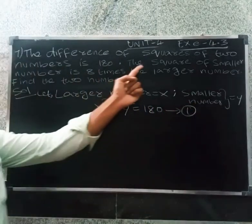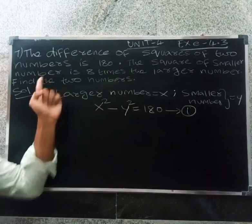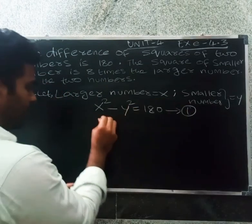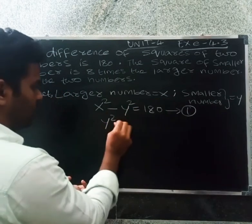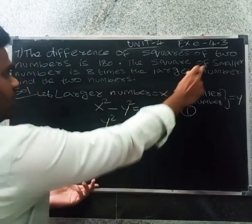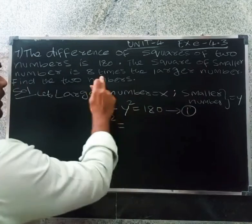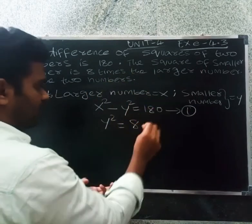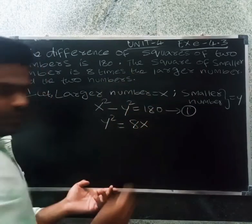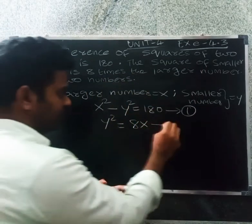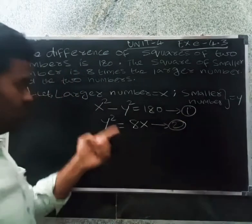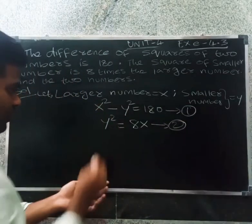The square of the smaller number: y squared equals 8 times the larger number. So y squared equals 8x. This is the second equation.